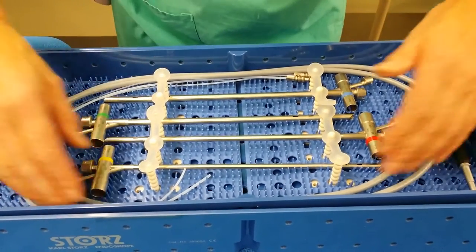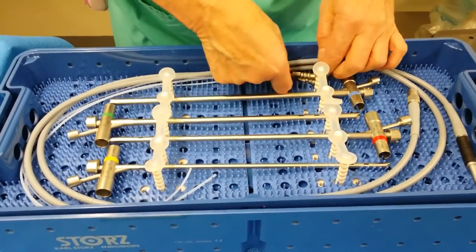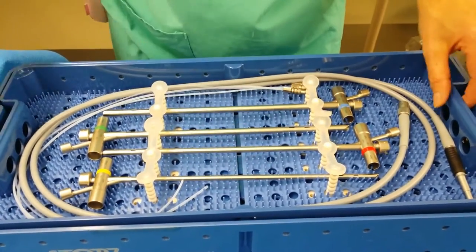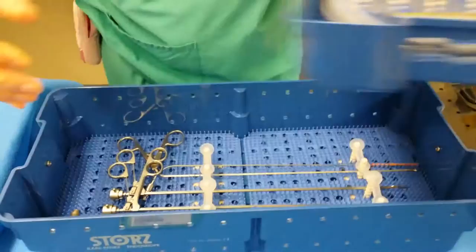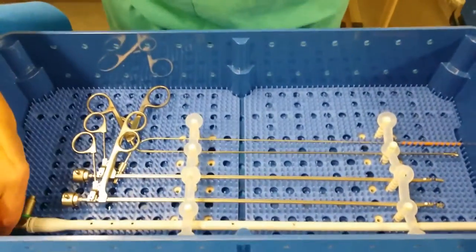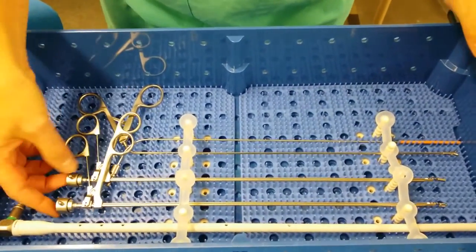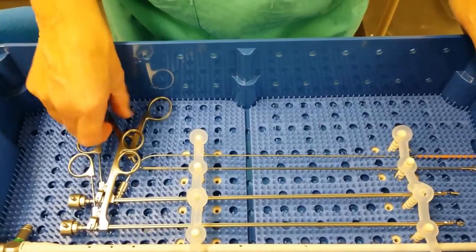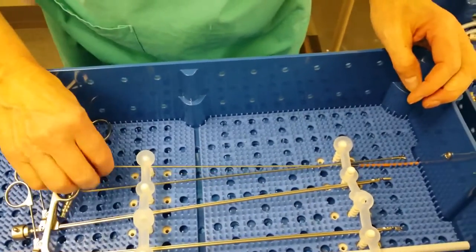A light lead on the top tray and three different sizes of suction cannulas. On the bottom tray, we've got a telescope, two optical forceps, a biopsy forceps, and a suction.